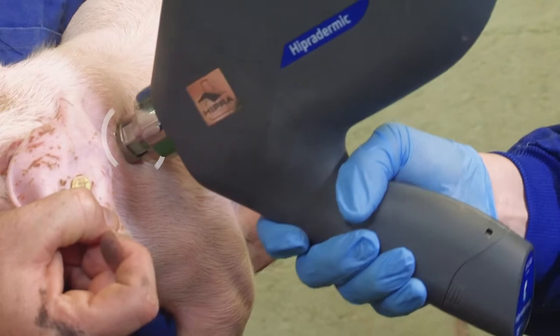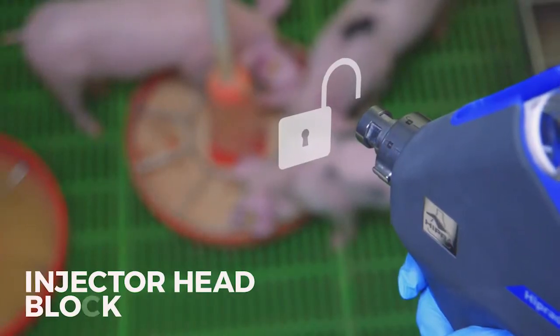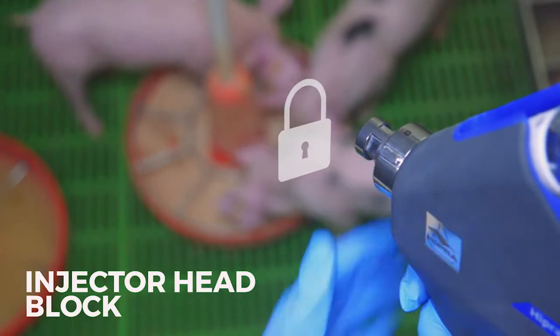The injection is easily performed by pressing the injector head against the pig's skin. No trigger needs to be pulled. The injector head can be blocked to avoid accidental injections.